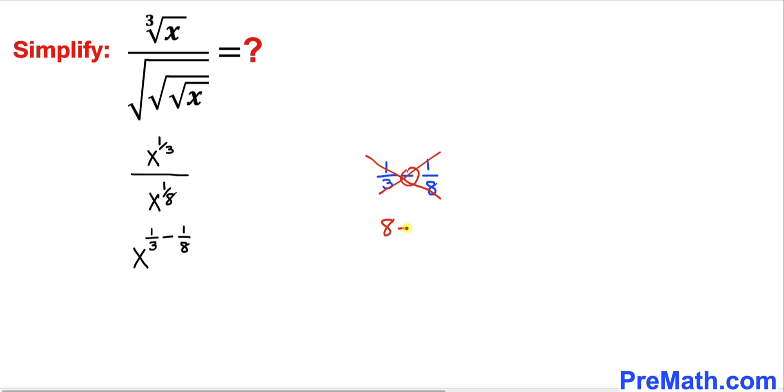Then put down the negative sign. The other way: 1 times 3 is 3. Divided by 3 times 8, multiply them out, giving us 24. If we simplify this, that gives us 5 divided by 24. Therefore we can write this as x to the power of 5 divided by 24.